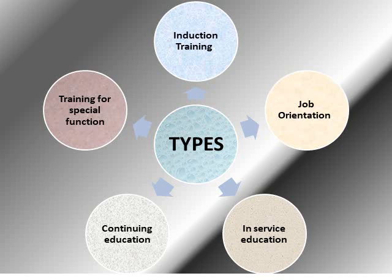The third type is in-service education. This is a planned educational experience provided in the job setting for employees so that their performance will be effective and services will be delivered effectively. The fourth type is continuing education — a planned activity where employees pursue higher education such as post-basic nursing, BSc, MSc, or PhD while remaining in service.